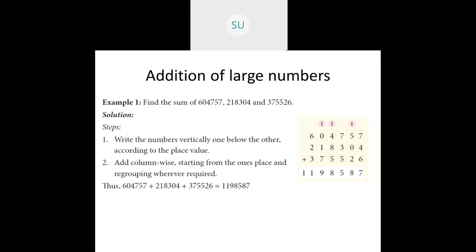In the 1s place we have 7 plus 4 plus 6. So 7 plus 4 is 11, and 11 plus 6 is 17. We write down 7 and carry over 1 to the 10s place. Then 1 plus 5 is 6, 6 plus 0 is 6, then 6 plus 2 is 8. So we write down 8 and move on to the 100s place.